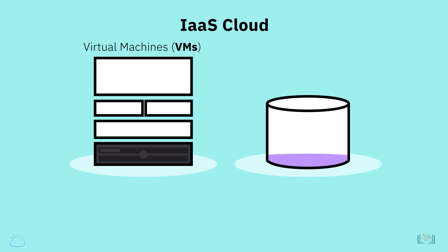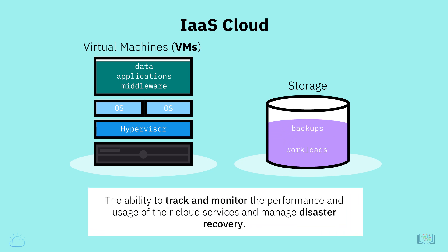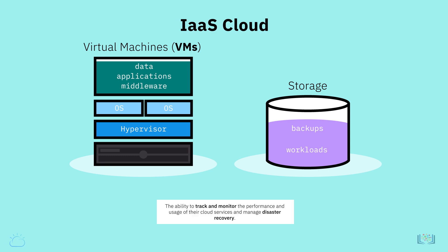These VMs typically come pre-installed with the customer's choice of operating system. Customers can then deploy middleware, install applications, and run workloads on these VMs. They can also create storage for their workloads and backups. Cloud providers often provide customers the ability to track and monitor the performance and usage of their cloud services and manage disaster recovery.